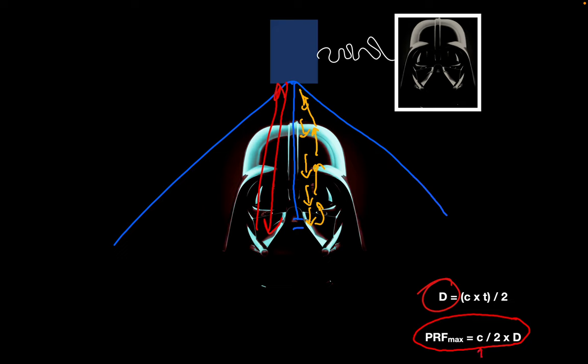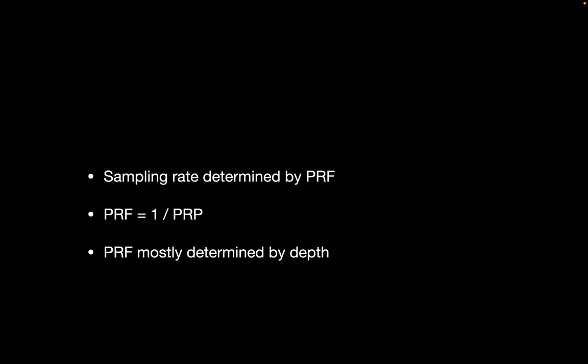Since the velocity of ultrasound in tissues is 1540 meters per second — a given — the pulse repetition frequency will be determined by imaging depth. The sampling rate is determined by the pulse repetition frequency, and pulse repetition frequency is determined by the pulse repetition period, which is governed by how deep you place your sample volume.